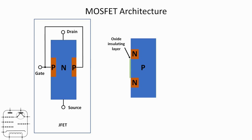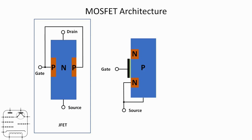Deposited on the surface of the substrate between the two N-channels is an oxide insulating layer — usually silicon oxide, since silicon is the substrate anyway. Overlaid on top of the insulator is a metal plate, which is the gate. Going left to right you've got metal, oxide, and semiconductor — hence the name Metal Oxide Semiconductor field effect transistor. The gate is completely insulated from the rest of the transistor. The source is connected to the N-channel and also to the P-type substrate, and the drain is connected to the other N-channel.